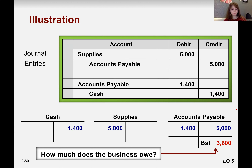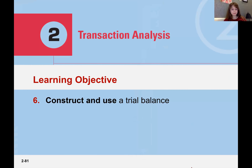The balance is 3,600. How much is the outsider's claim? Just take out the balance of accounts payable. The credit side is 3,600 greater than the debit side, so the balance is 3,600. This is how we analyze the transaction, make a journal entry, and transfer the journal entry to ledgers — or posting.